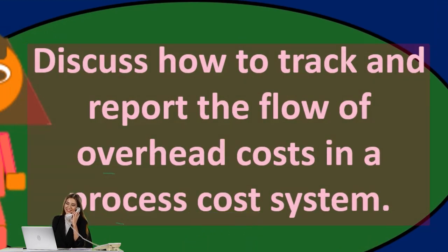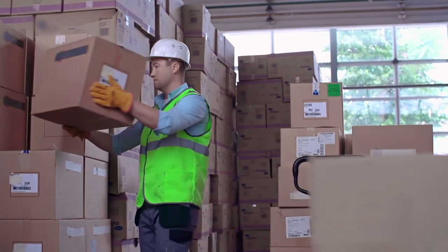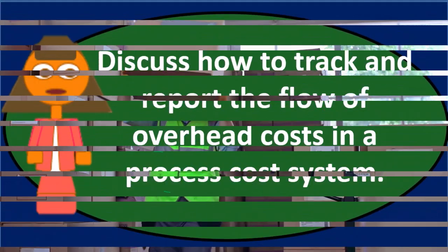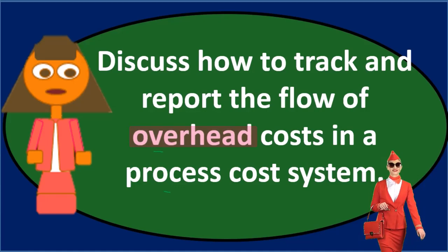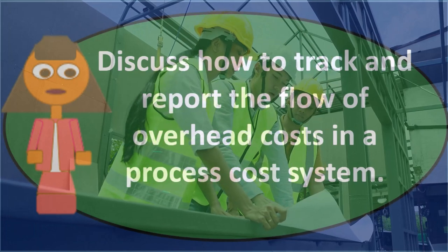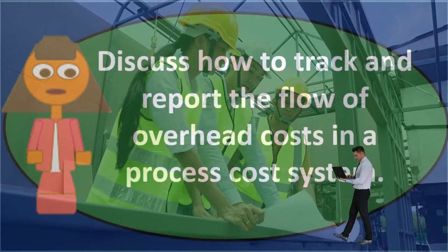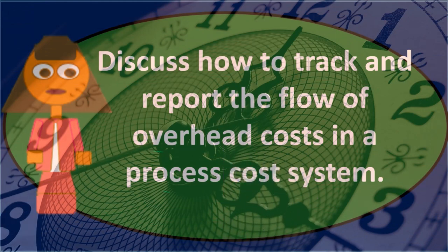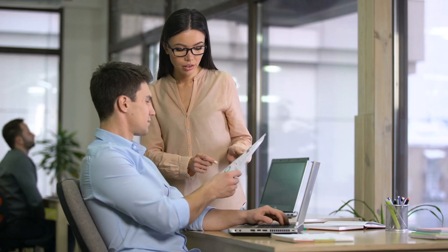Overhead is a bucket that includes many different items we know should be in ending inventory, but that we don't want to or can't track to a specific process. When overhead is applied to production using a predetermined overhead rate, work-in-process is debited and factory overhead is credited. At that point, the overhead is in the work-in-process account.